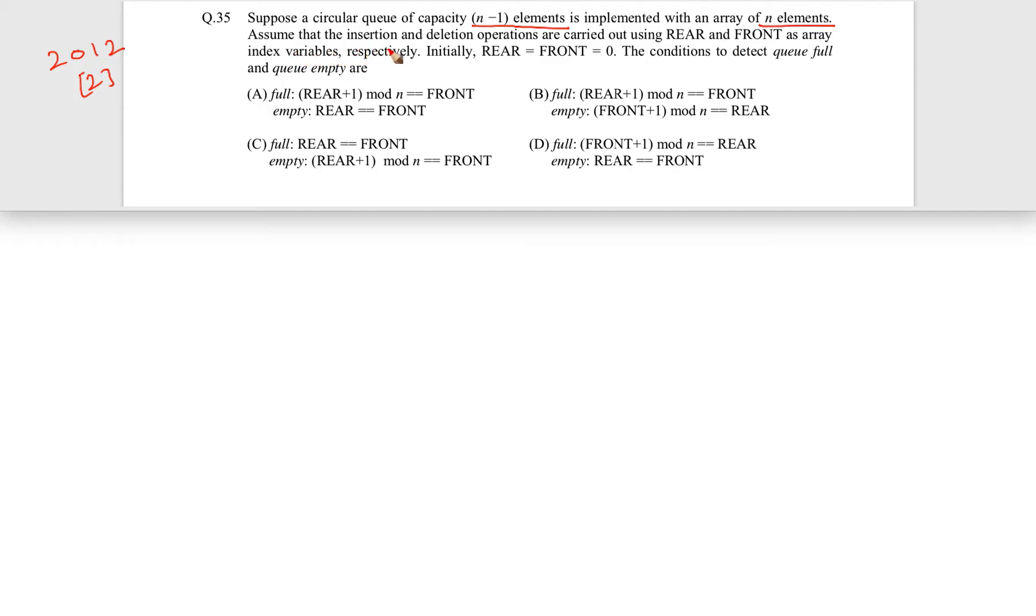Assume that the insertion and deletion operations are carried out using rear and front, these pointers as array index variables. Now, initially what is happening is that rear is equal to front is equal to 0.